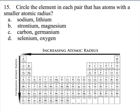Looking at the second set, you have strontium and magnesium. Magnesium definitely smaller. It only has three energy levels, where strontium has five. Carbon and germanium. Carbon is definitely going to be smaller than germanium. Carbon only has two energy levels, germanium has four. And then finally, selenium and oxygen. Oxygen is the smaller of the two. It only has two energy levels, selenium has four as well.